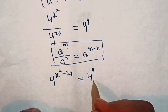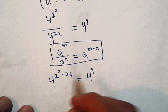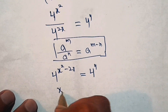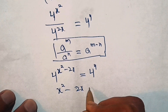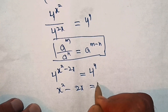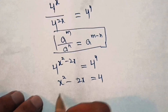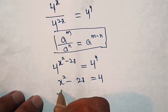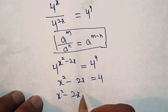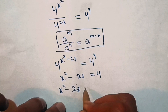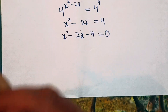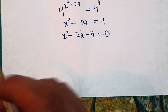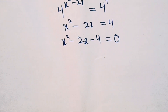Since the bases are the same on both sides, the exponents will be equal. So that is x square minus 2x equal to 4. Rearranging, x square minus 2x minus 4 equal to 0. This is a quadratic equation, so I will simplify it by the method of completing the squares.